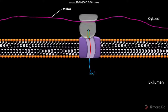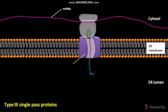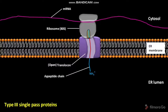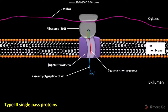Now we will discuss the positioning of type III single-pass proteins. The ER membrane has a translocon in an open state, and the ribosome and nascent polypeptide chain associate with it. Near the N-terminus of the nascent polypeptide chain, the signal anchor sequence is located. This signal anchor sequence in type III single-pass proteins prevents further extrusion of the nascent polypeptide chain into the ER lumen, similar to a stop-transfer sequence in type I single-pass proteins. The signal anchor sequence is hydrophobic in nature.